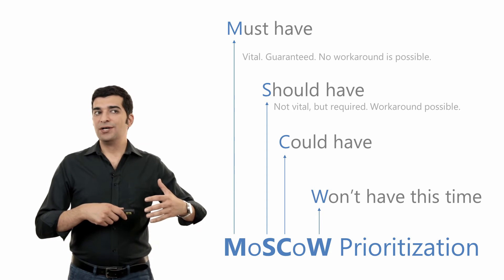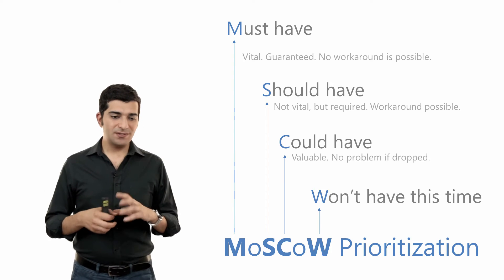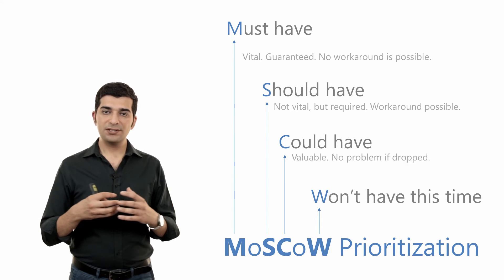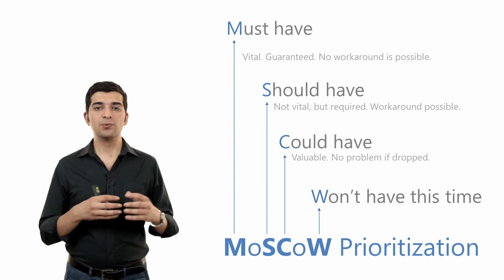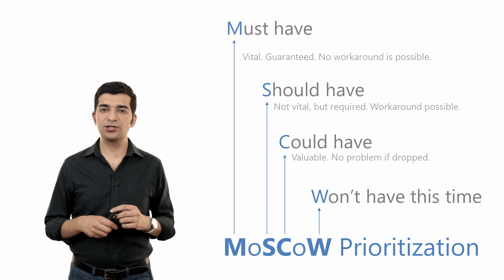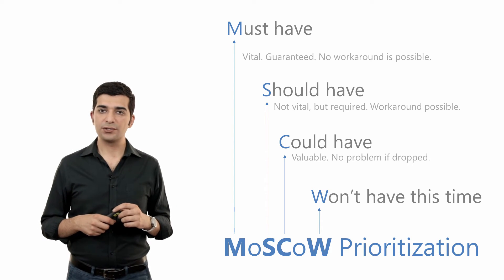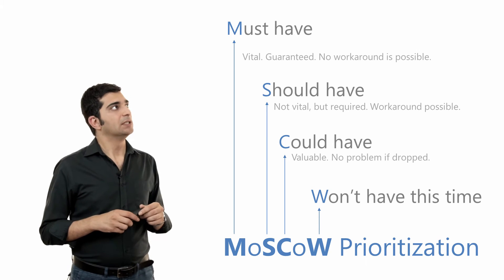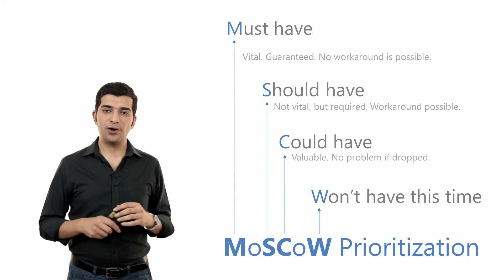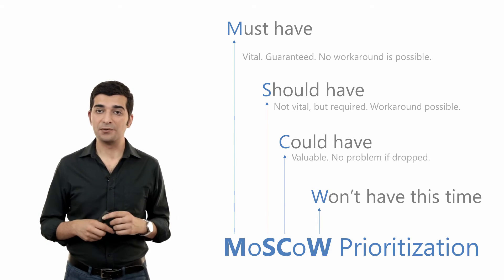And what about could-haves? They are the fancy features. Could-haves are those that probably bring value, but if you don't have them, you won't have a problem. Think of all the great features you wish you could have in your word processor — for example, if you spell the same thing differently in two different parts of the document, it can understand it and tell you about it.